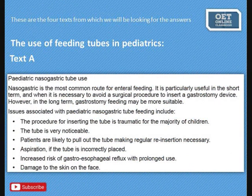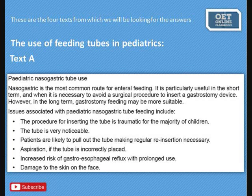These are the four short texts from which we will be looking for the answers. This text is about use of feeding tubes in paediatrics. Here you can see Text A and it is about pediatric nasogastric tubes. Now you have 30 seconds to read this text before we move on to the other three texts. Please skim read and understand the content of each paragraph as it will be helpful to answer questions in Part A.